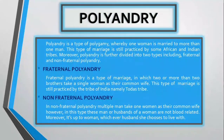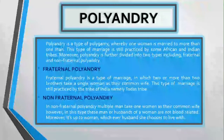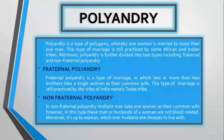Polyandry is a type of polygamy whereby one woman is married to more than one man. This type of marriage is still practiced by some African and Indian tribes. Polyandry is further divided into two types: fraternal and non-fraternal polyandry. Fraternal polyandry is a type of marriage in which two or more brothers take a single woman as their common wife. This type is still practiced by the Toda tribe of India.